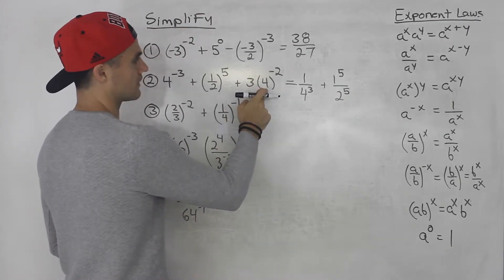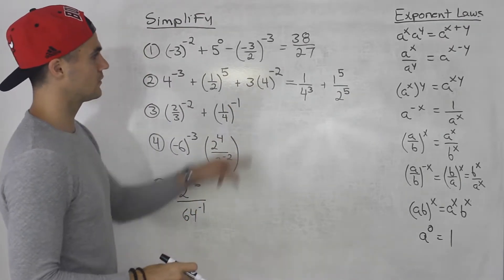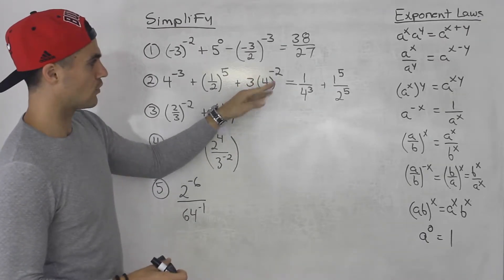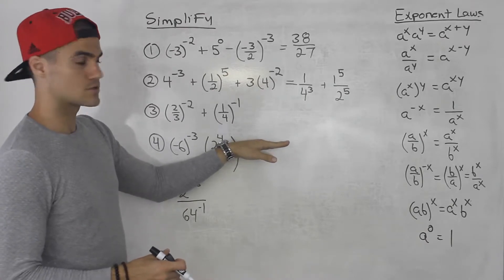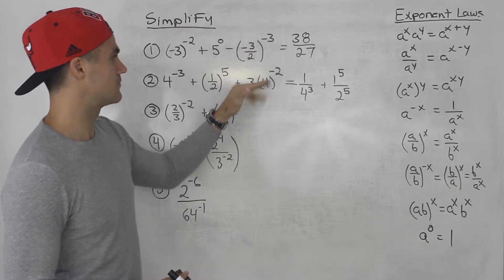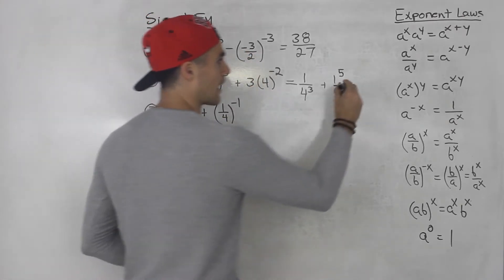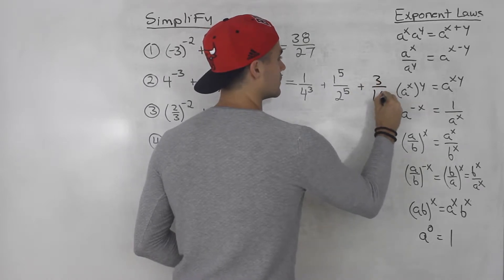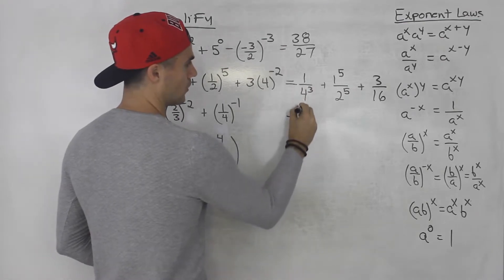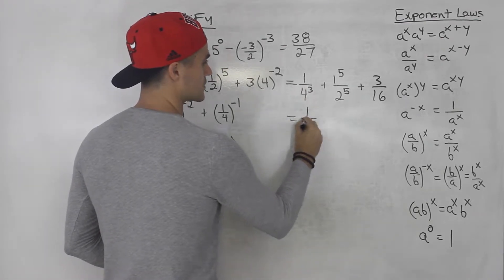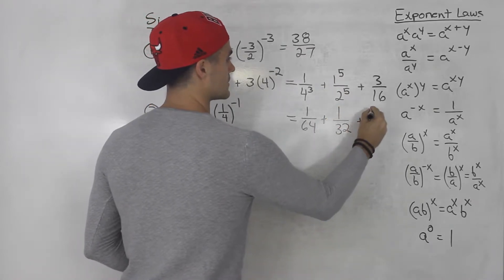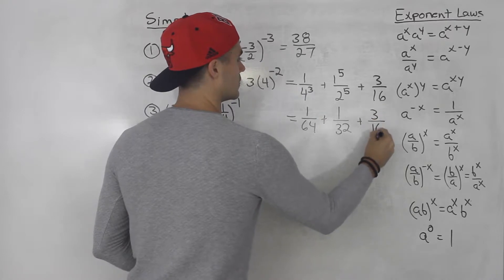And then we have three times four to the negative two. Notice the four is to the power of negative two, but the three isn't. So the four we would bring down to the denominator using this law, but the three stays up top because the three doesn't have any exponents. So we would have three over 16. One over four to the power of three is one over 64, one to the power of five is one, two to the power of five is 32, and this is three over 16.